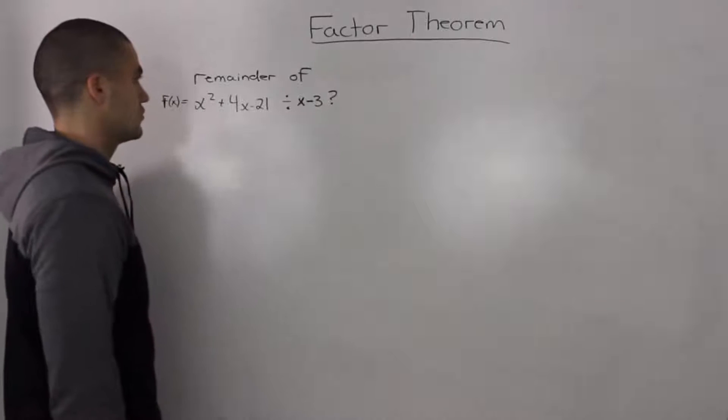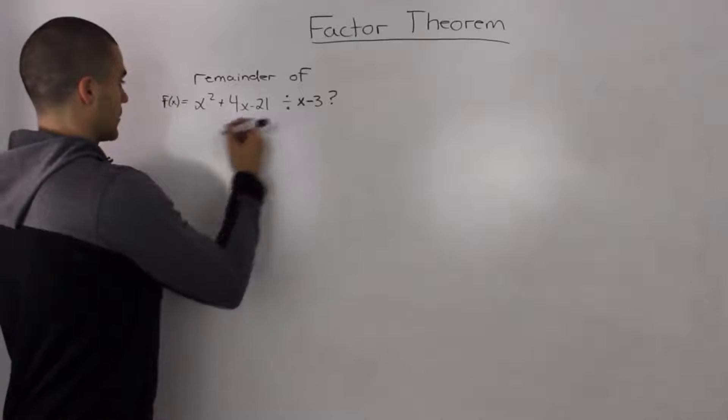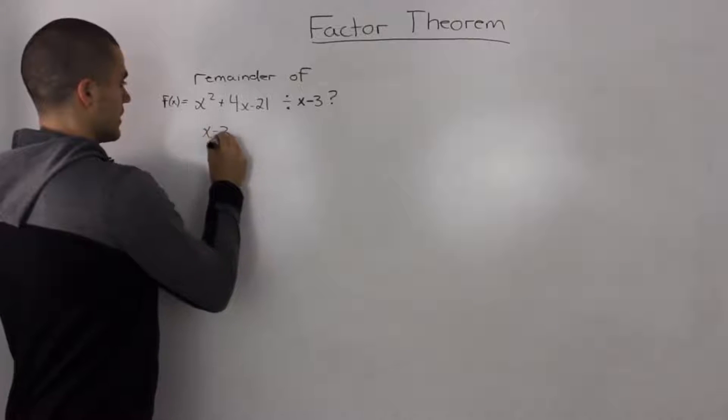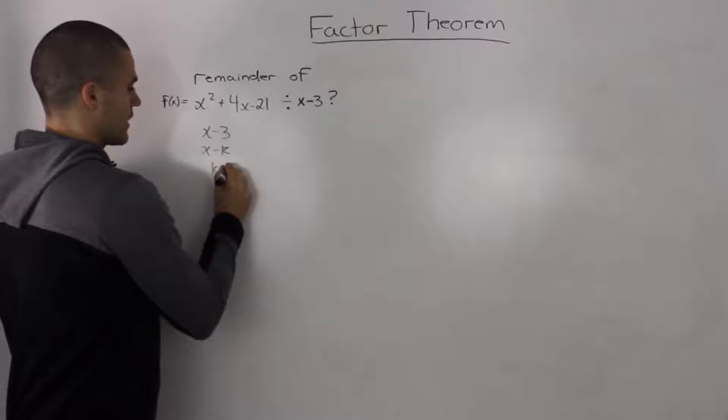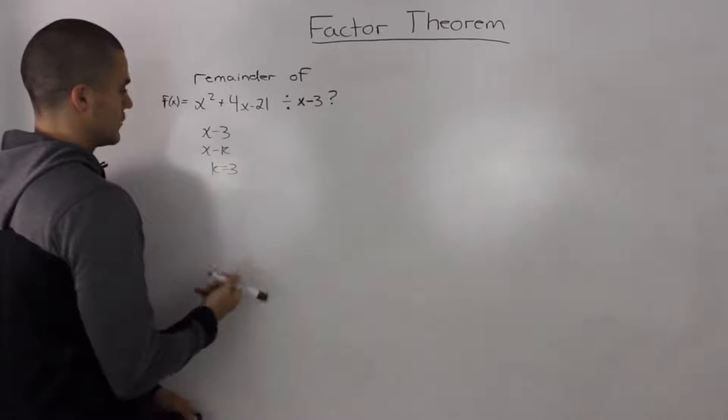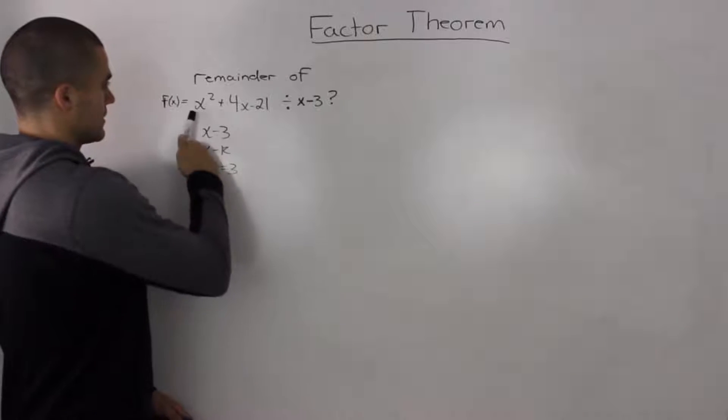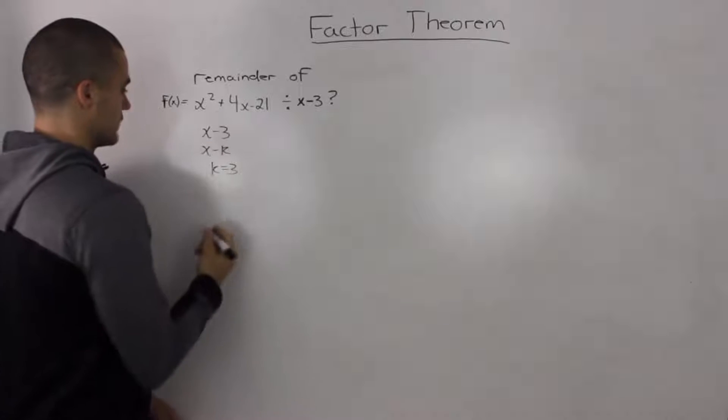We can do that using the remainder theorem. Our divisor is already in the x - k form, and our k value is 3. So to find the remainder, we just plug in 3 into our dividend, into the x values of the dividend.